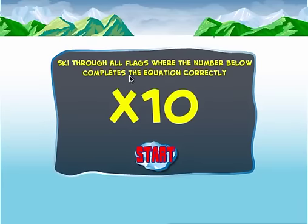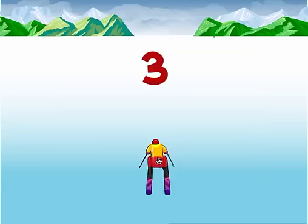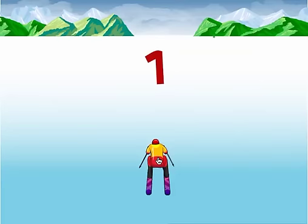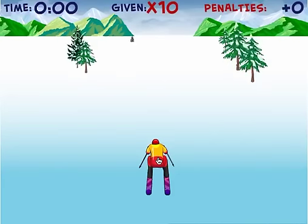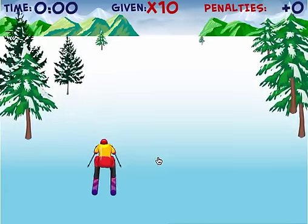It says: ski through all flags where the number below completes the equation correctly. So we're going to be practicing multiplying by 10. I click start and I'm going to use the arrow keys — I've got to think fast on my feet.